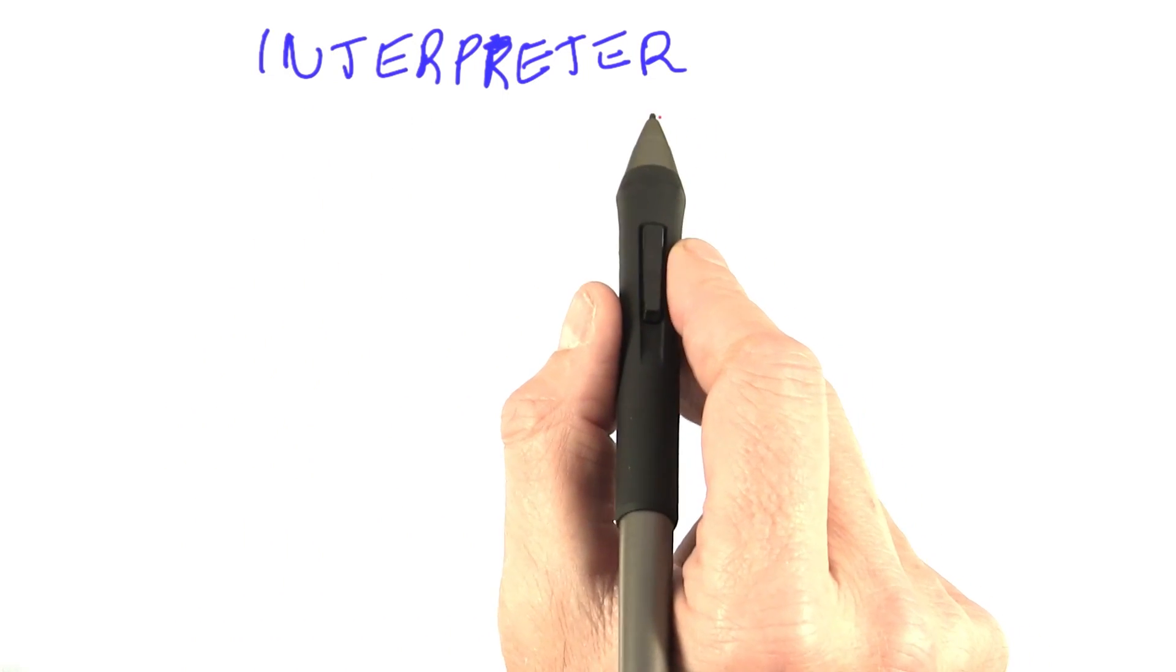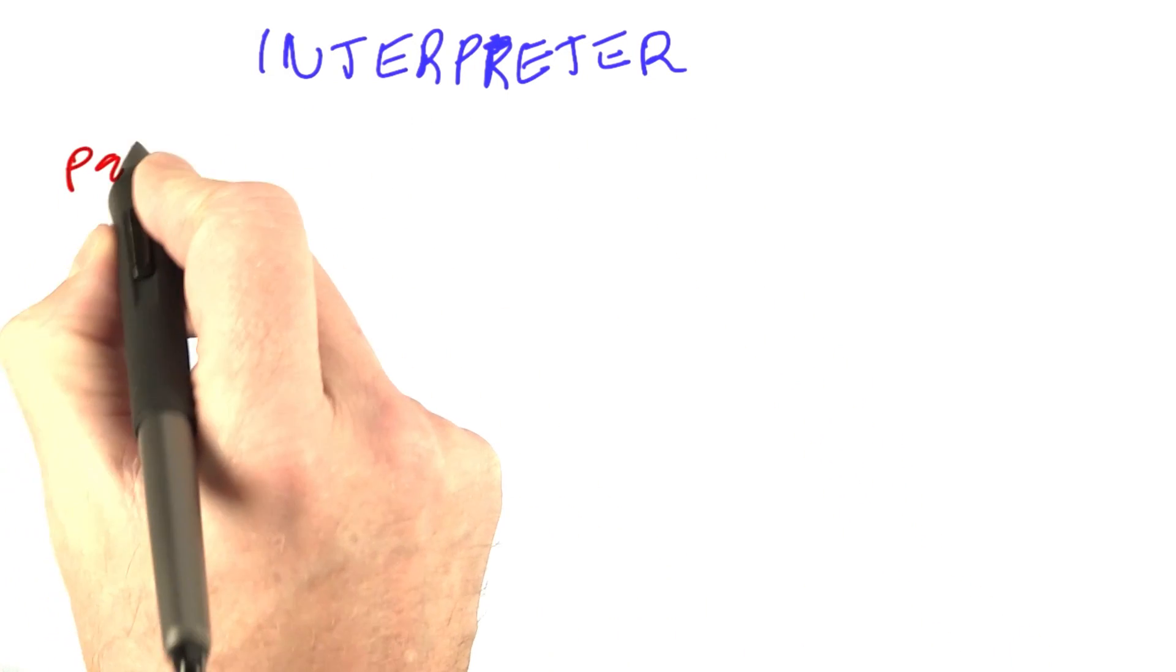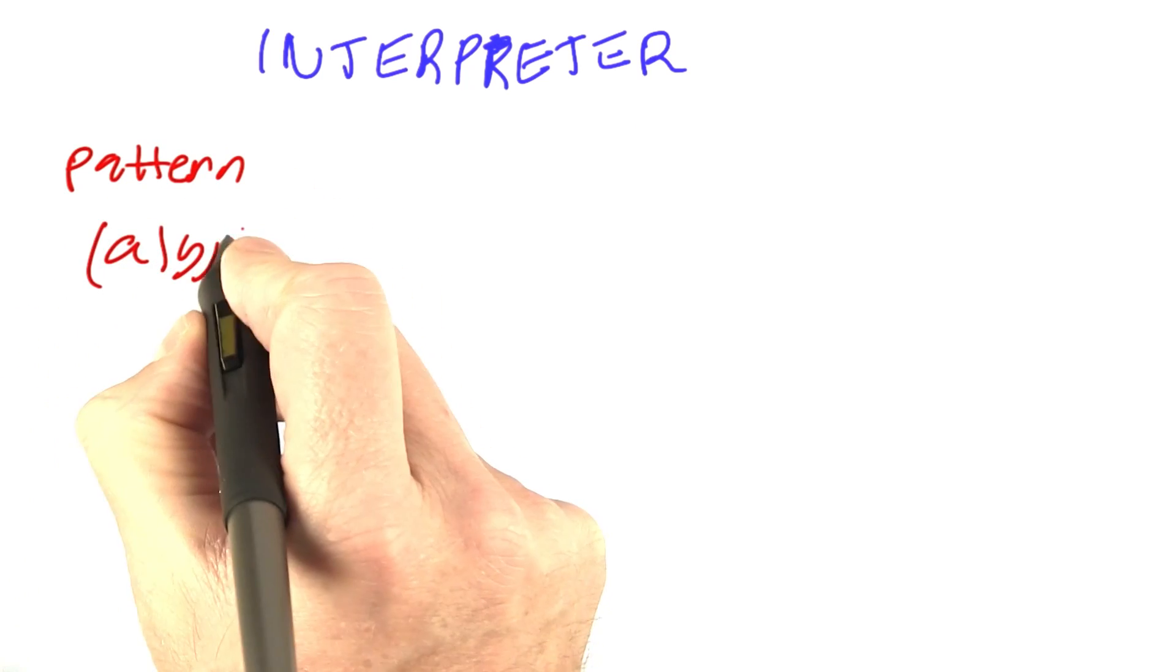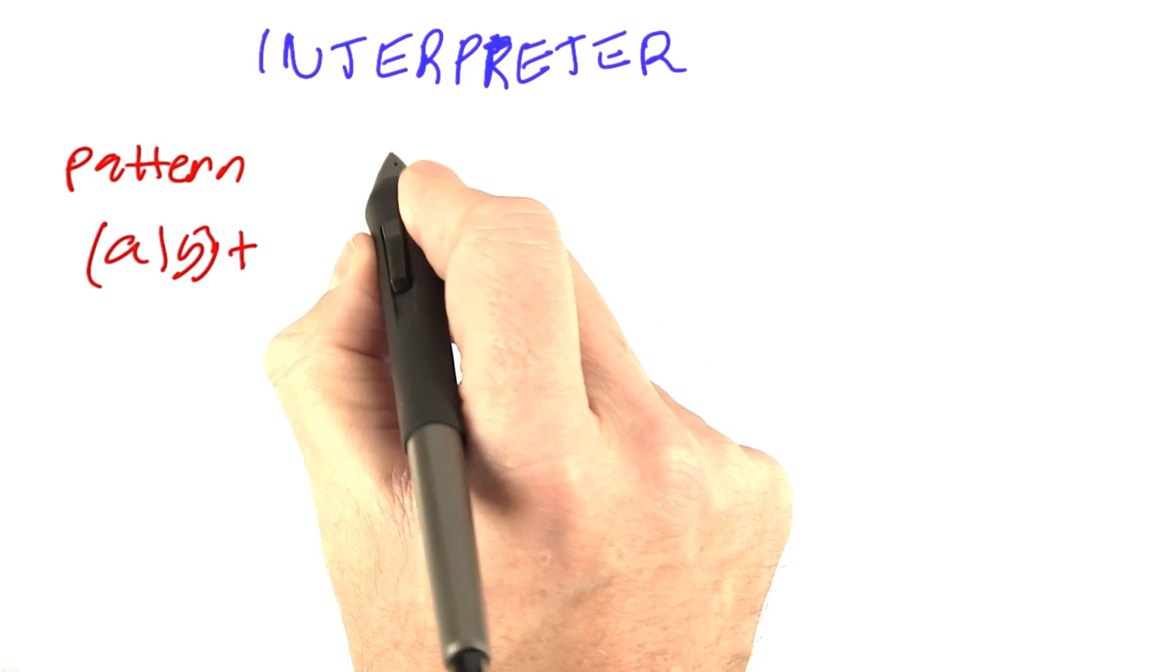Let's quickly summarize how a language interpreter works. For regular expressions, we have patterns like A or B plus, which define languages.